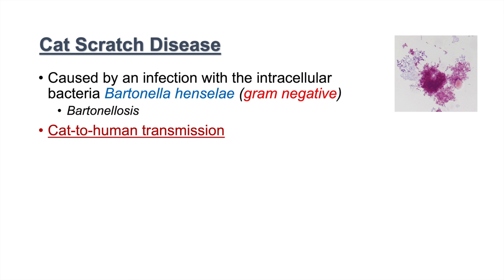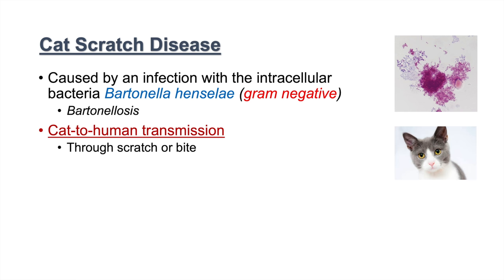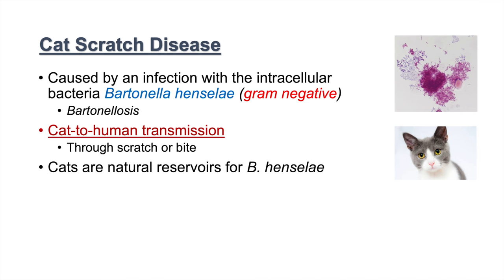Cat scratch disease, as its name implies, involves cat-to-human transmission. We can get cat scratch disease from a cat through a scratch or a bite. Cats are the natural reservoirs for Bartonella henselae.